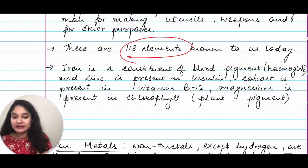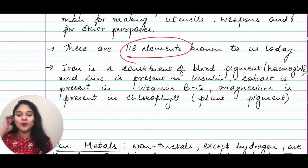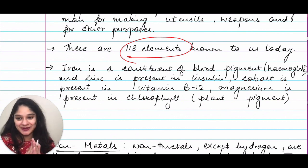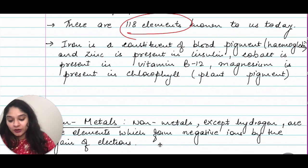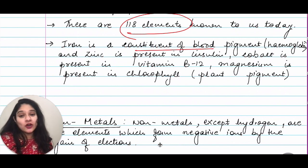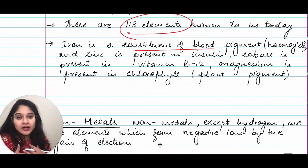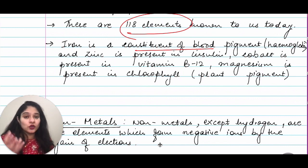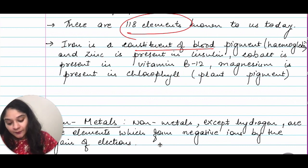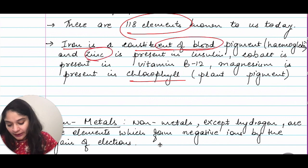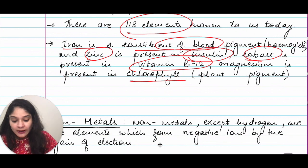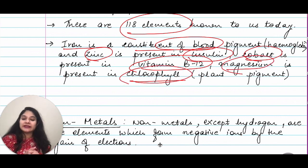There are a total of 118 elements that we know so far, and in future we do not know how many more may come forward. Now, some metals are important for our well-being and are present within us. Iron is a constituent of blood — it is present in the form of hemoglobin. Zinc is present in insulin, which is produced to control sugar levels. Cobalt is present in vitamin B12. Magnesium is present in chlorophyll, which is a plant pigment. So you have iron in blood — I hope this basic understanding is clear for metals.